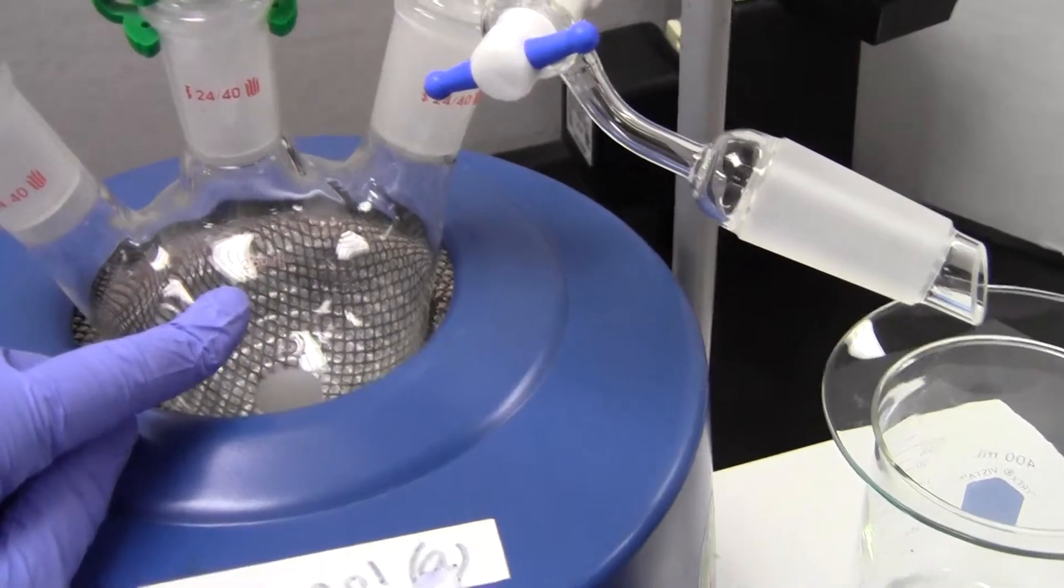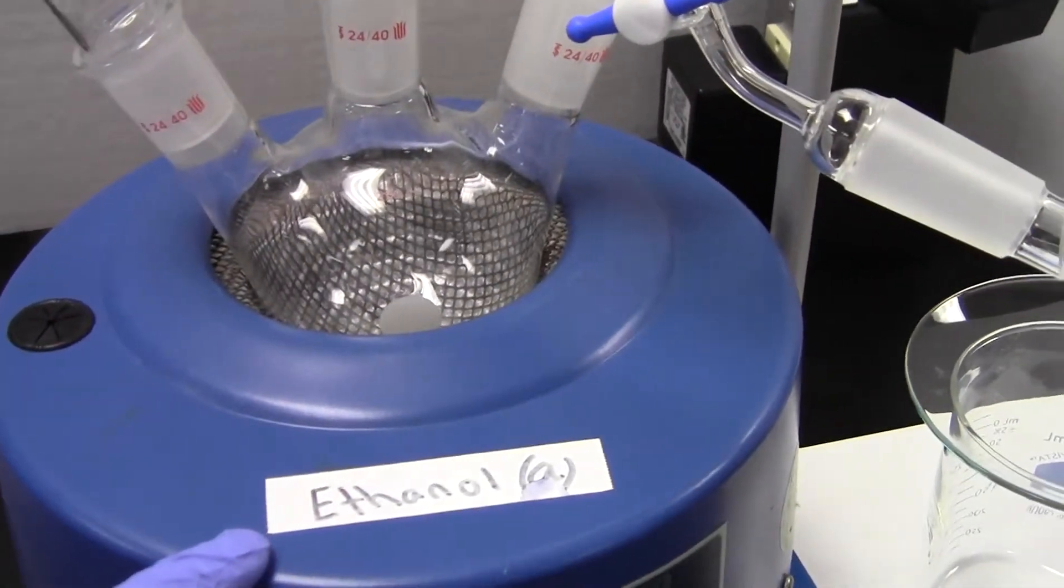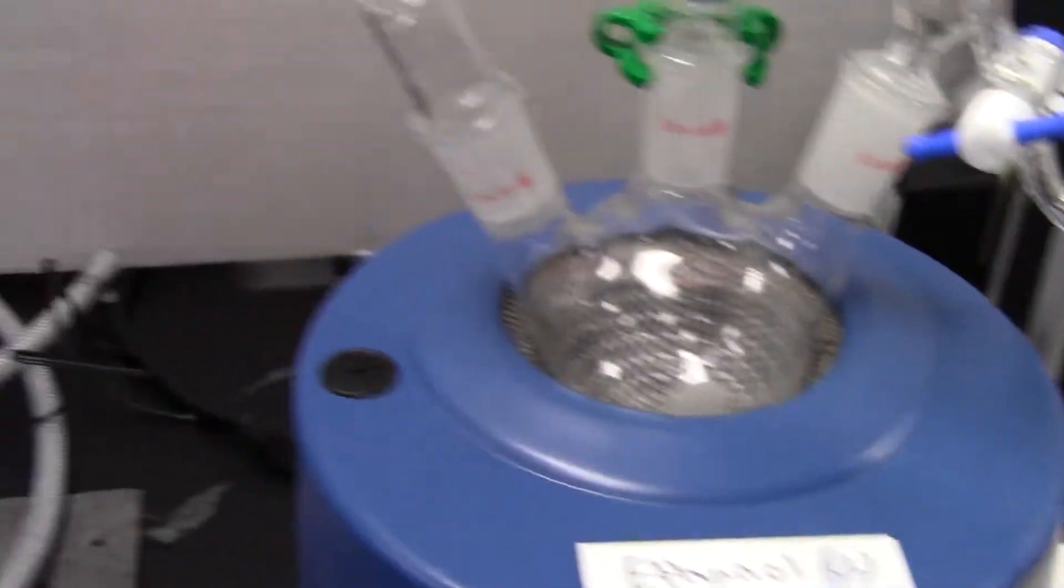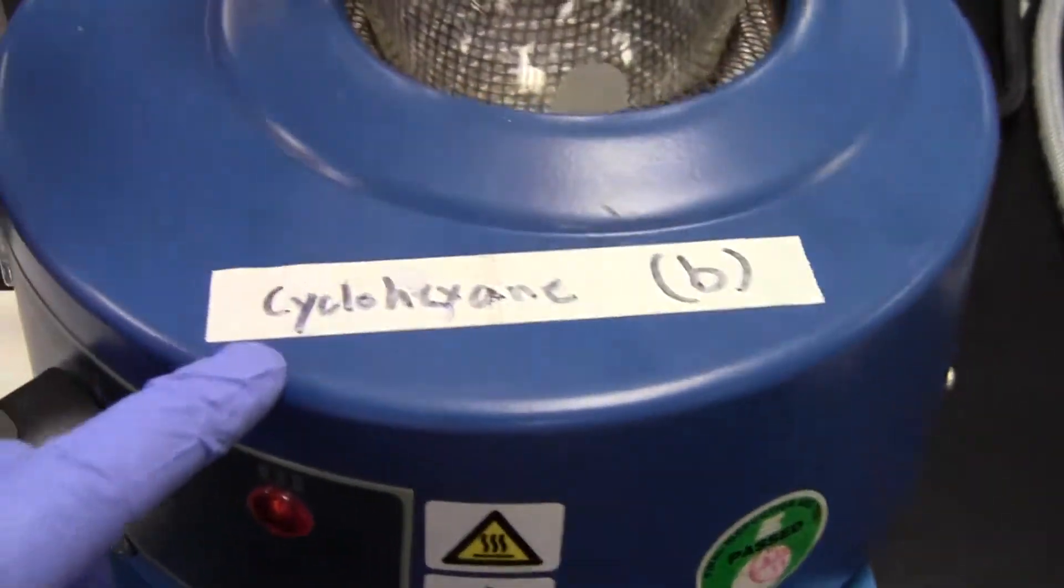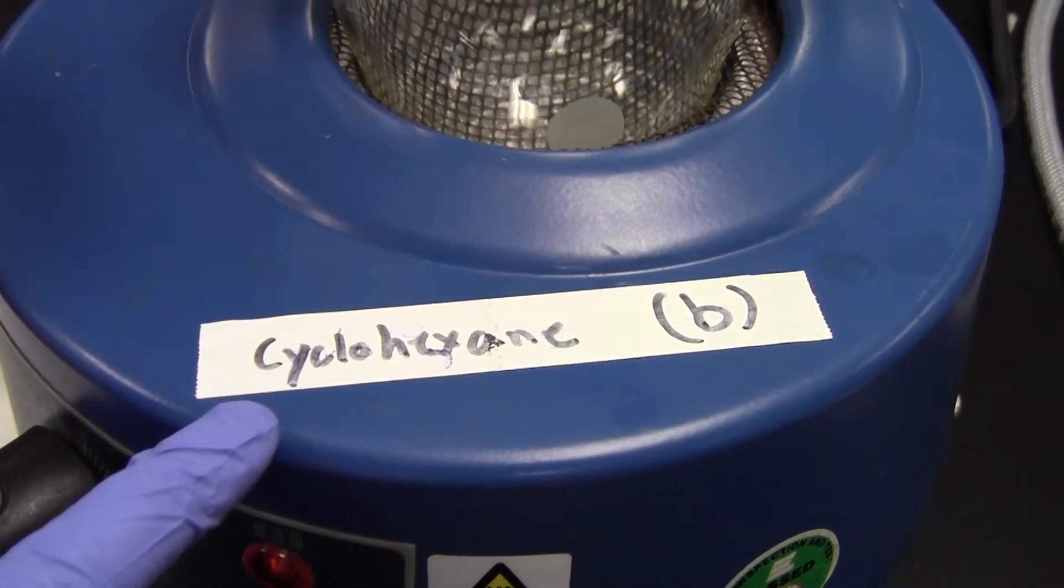Introduce the first liquid, ethanol, into the flask. If you're doing this lab a second time, we have another identical setup where you would be using cyclohexane as your first liquid and adding ethanol to that.